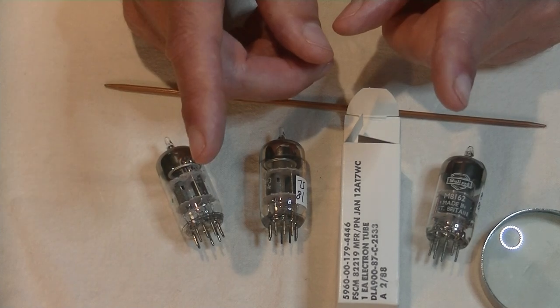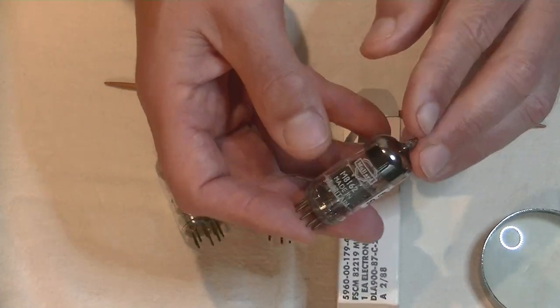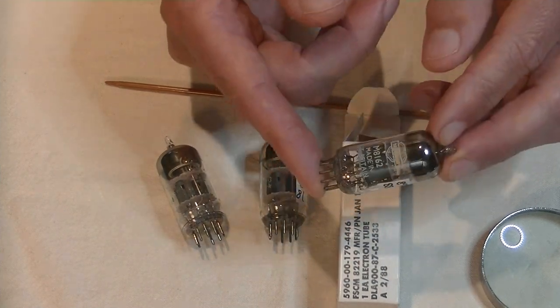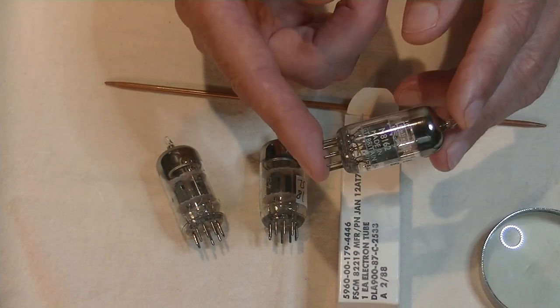So, lastly, let's talk about microphonics. Mullards are famous for being microphonic. In fact, back in the day, repairmen in the UK would choose other brands of tubes because they had so much trouble with noise from Mullards.